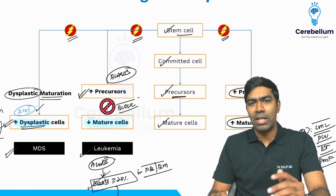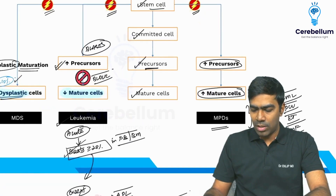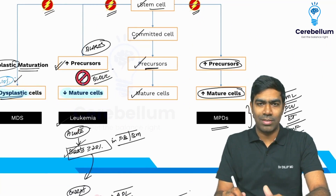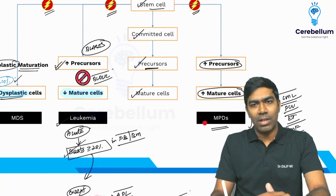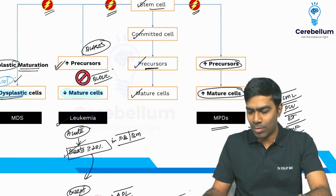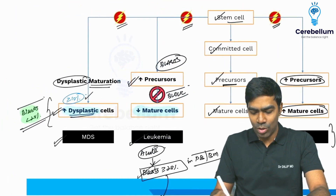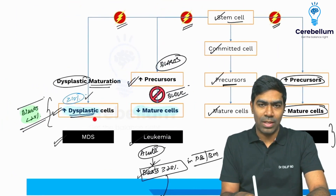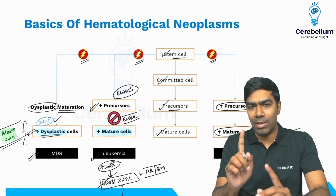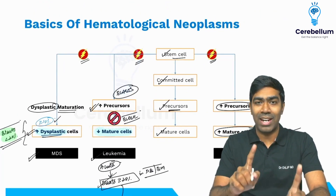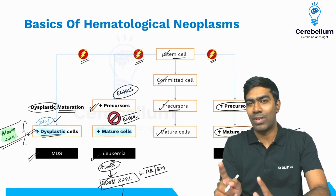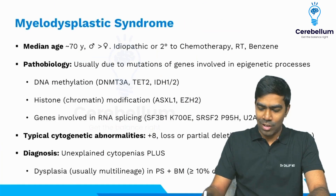Because all of these are basically problems of the stem cells, you can get transformation into acute leukemia. For example, a myeloproliferative disorder over time carries a risk of transformation into AML, and patients with myelodysplastic syndrome can also transform into AML over time. So there is a risk of transformation to AML with regard to both myeloproliferative neoplasms and myelodysplastic syndromes.